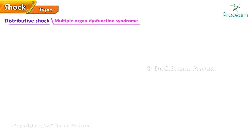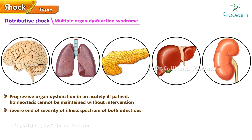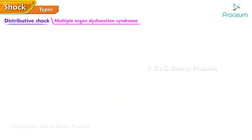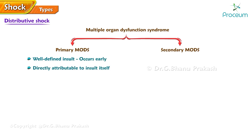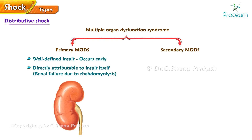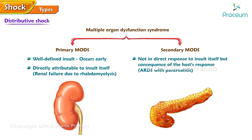Multiple Organ Dysfunction Syndrome (MODS) refers to progressive organ dysfunction in an acutely ill patient such that homeostasis cannot be maintained without intervention. It sits at the severe end of the illness spectrum for both infectious conditions (sepsis, septic shock) and non-infectious conditions such as systemic inflammatory response syndrome from pancreatitis. MODS can be classified as primary — where organ dysfunction occurs early and is directly attributable to the insult, e.g., renal failure due to rhabdomyolysis — or secondary, where organ failure is a consequence of the host response, e.g., acute respiratory distress syndrome in patients with pancreatitis.